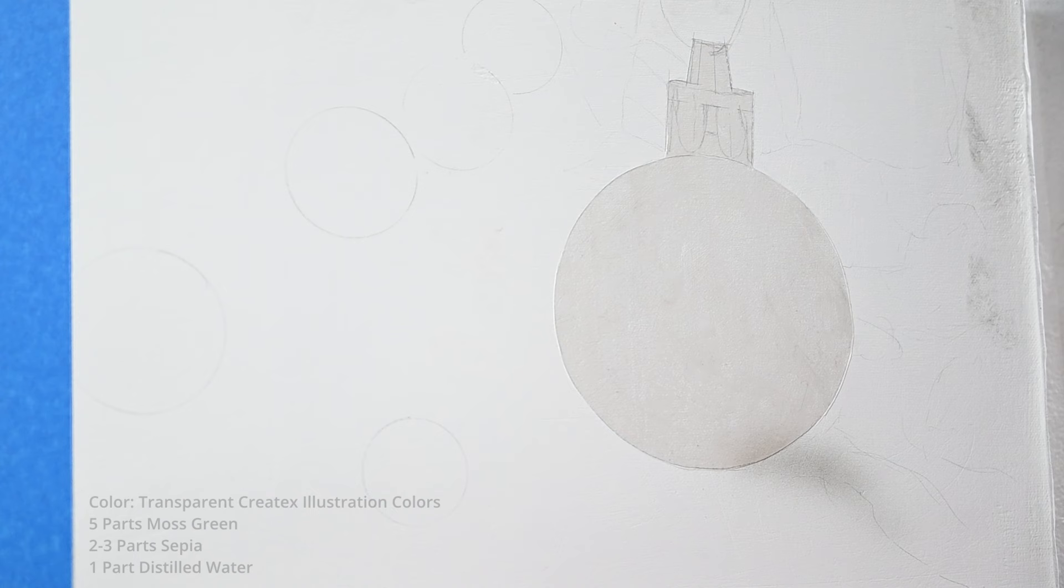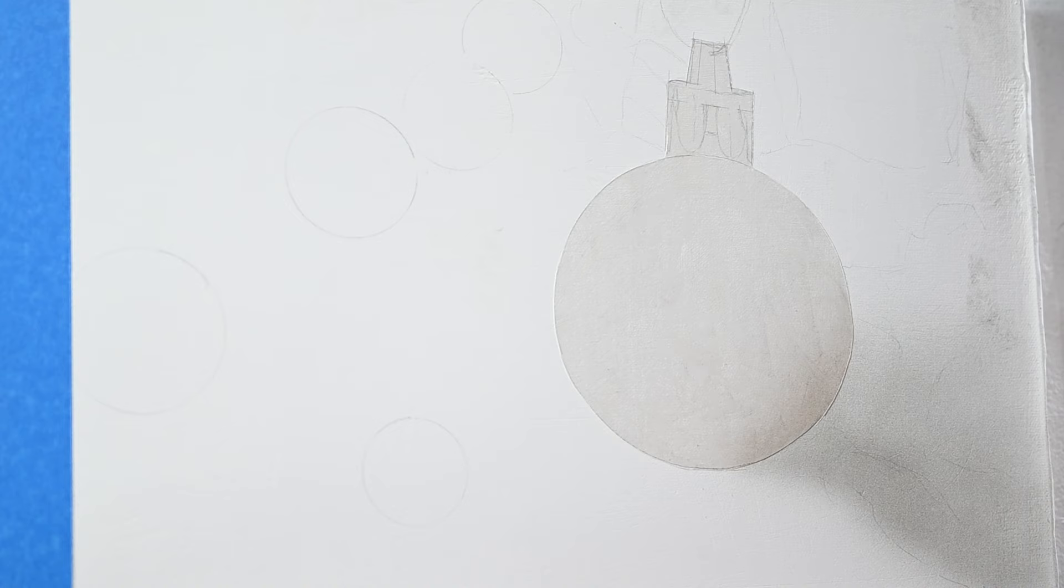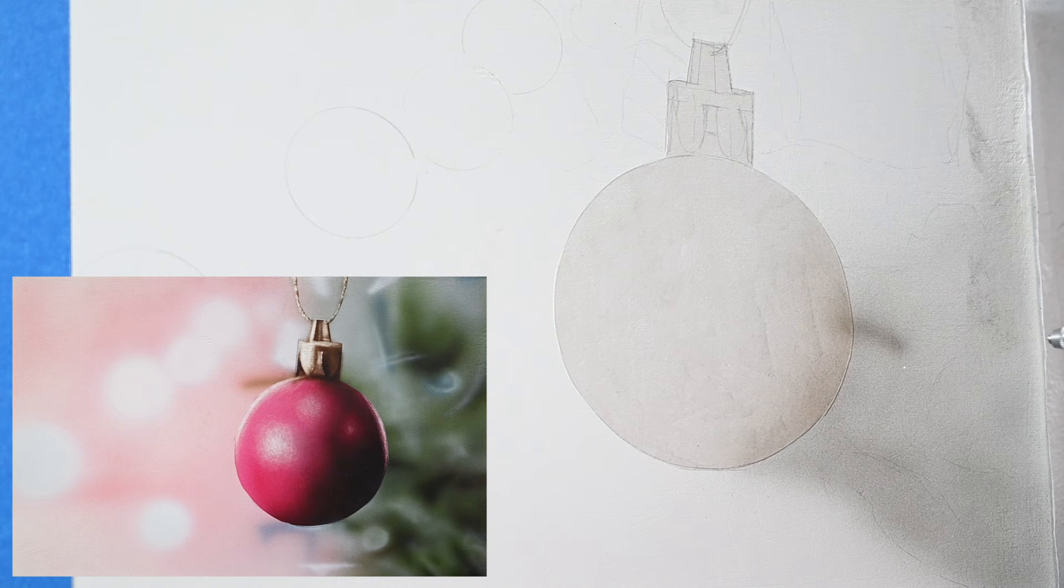The color in my airbrush right now is five parts moss green to about two or three parts of sepia. This is going to give me a very muted green color. It's almost going to look brown on the painting. I'm looking at my reference and trying to pay attention to where I see some of these darker, deep shadow shapes.